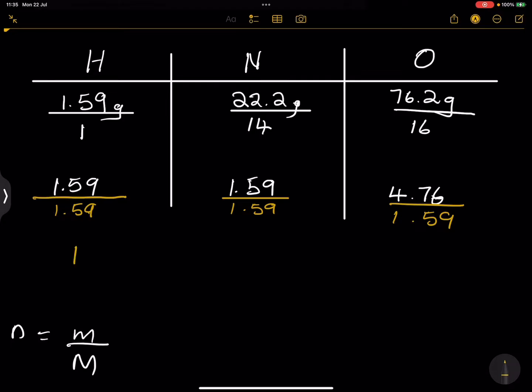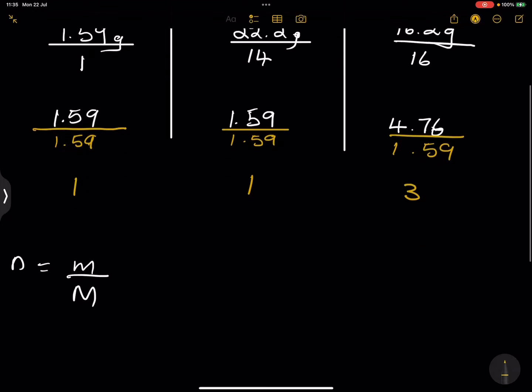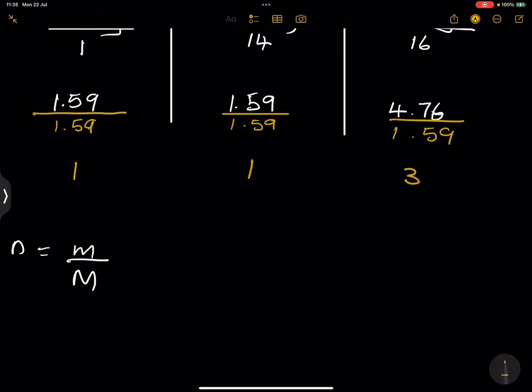So that gives us 1. So the ratio is 1 to 1. Let's take the last one. We've got 4.76 and we divide that by 1.59, that gives us 3, or 2.99, which gives us 3. So which means if we're looking at the empirical formula of this acid, it would be H1, N1, and O3. This would be the manufacturing of nitric acid.